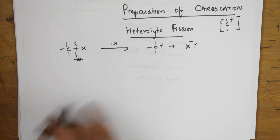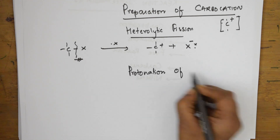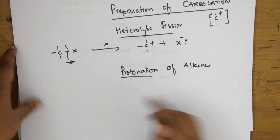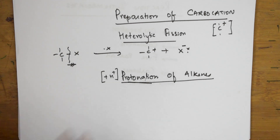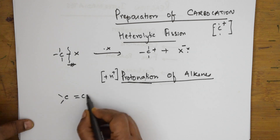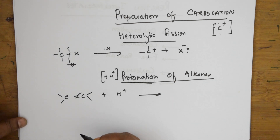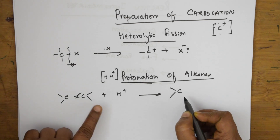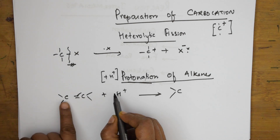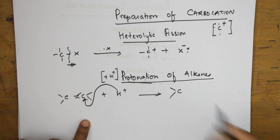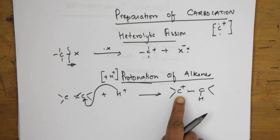The electronegative halogen X⁻ takes the shared pair of electrons, and the leftover carbocation C⁺ is formed — this is how the carbocation is formed. Now the next formation: protonation of alkenes. Protonation means addition of a proton H⁺. When I add H⁺ to an alkene double bond, there is a cleavage of the pi bond. The proton attacks one carbon and it becomes C⁺ single bond with H, forming a carbocation.